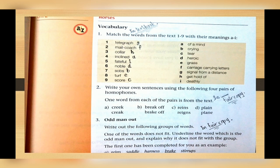For example, telegraph - what does it mean? It means G, which is signal from a distance. Mail coach - you will match with F, which means carriage carrying letters. Number three, collar - collar will be matched with H, which is get hold of. Inclined will be matched with A, which is of a mind. Five is faithful - faithful will be matched with I, which is deathly.